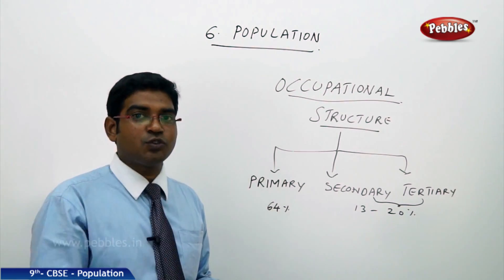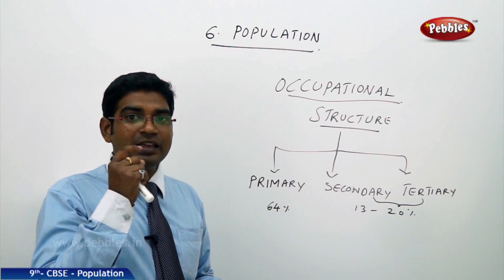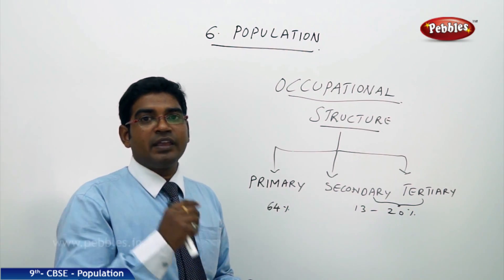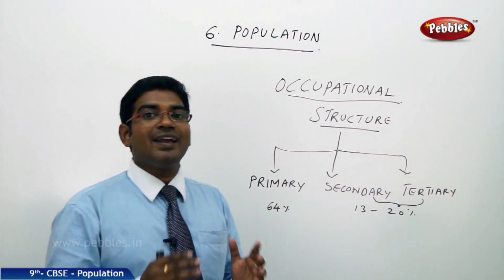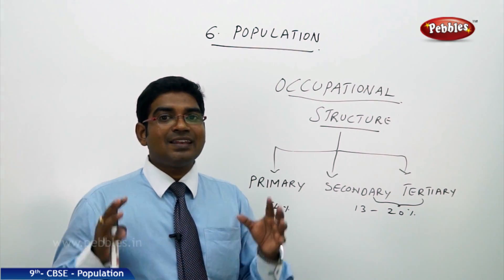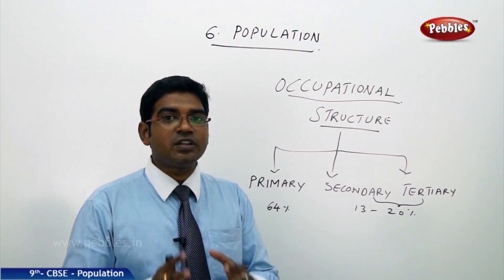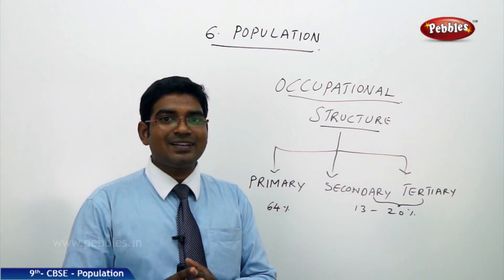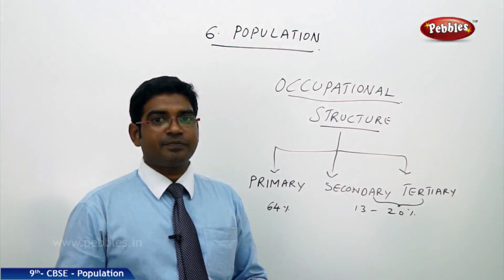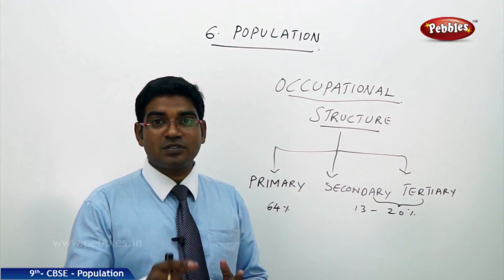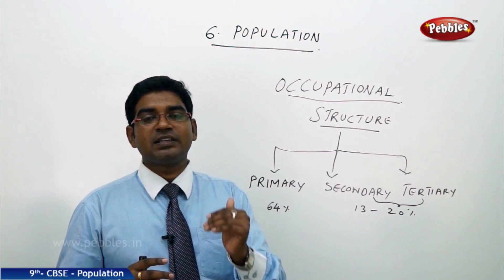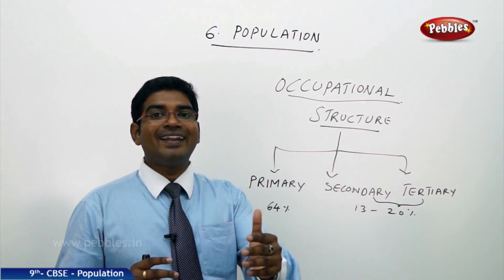Based on the work of the people, the future and the status of a country is determined in international standards. India is still considered a developing country because India's large population is engaged in agriculture, which falls under the primary sector. This is why occupational structure plays a vital role in determining a country's development progress.